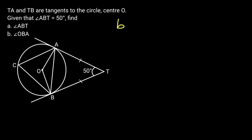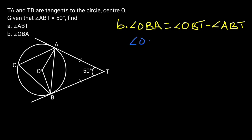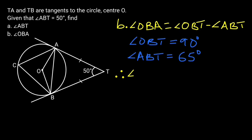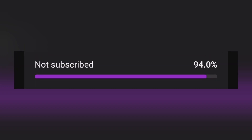Solution B: Angle OBA is equal to angle OBT minus angle ABT. Angle OBT is equal to 90 degrees. Reason: Tangent and radius meet at 90 degrees at the point where they meet. Angle ABT is equal to 65 degrees. Therefore angle OBA is equal to 90 degrees minus 65 degrees, which is 25 degrees.